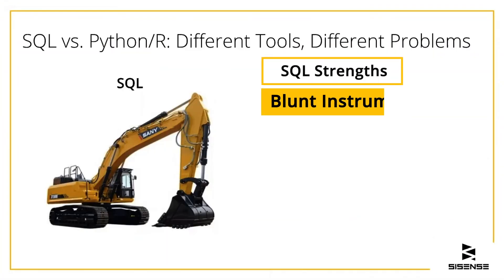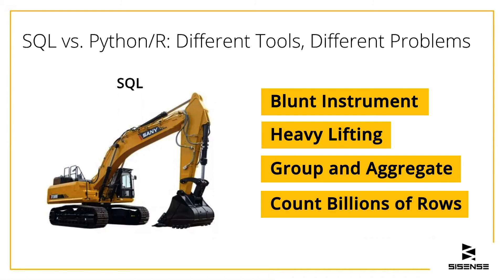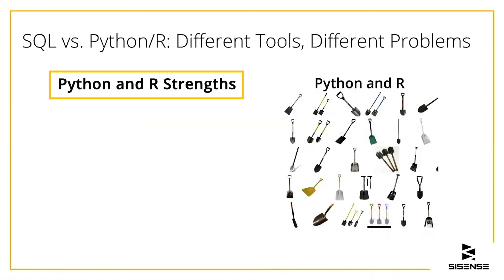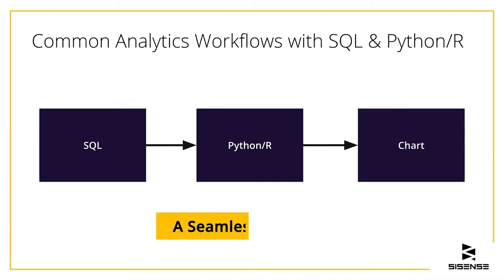SQL is a blunt instrument — it's really good at the heavy lifting. Then you get into Python and R, which are smaller, more refined tools. This is where you refine your data — it's not for heavy lifting, it's for nuance: statistical analysis, feature engineering, and cool visualizations. Start with SQL, do the heavy lifting, then start modeling data using Python. Do things like pivots, which are really hard in SQL but really easy in Python, or a regression analysis, which is like one line of Python, and then create a visualization and share it.